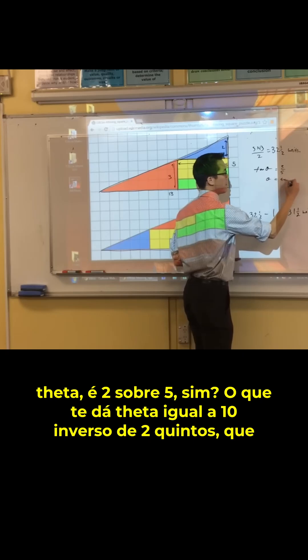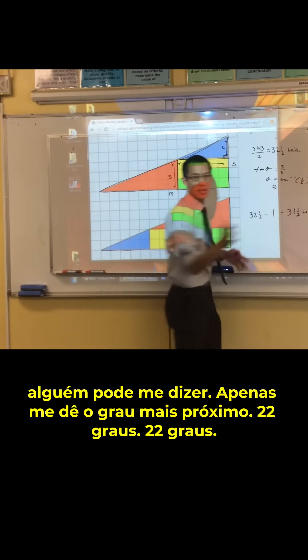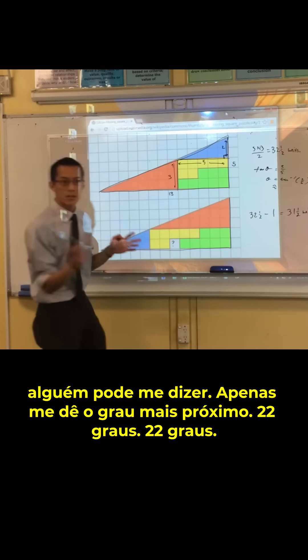Which gives you theta equals tan inverse of 2 fifths, which someone could tell me, just give me nearest degree. 22 degrees. 22 degrees.